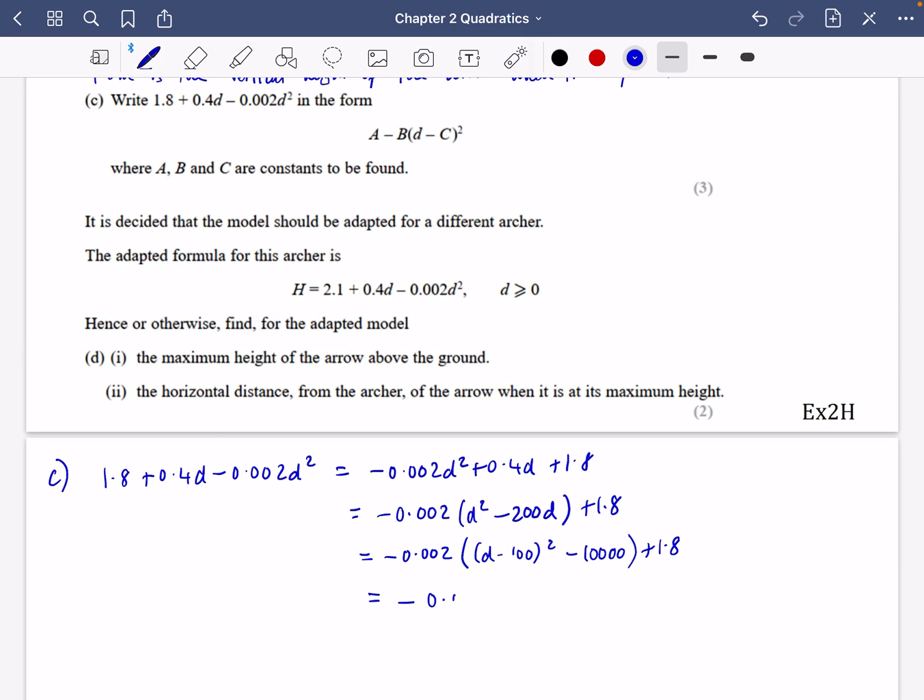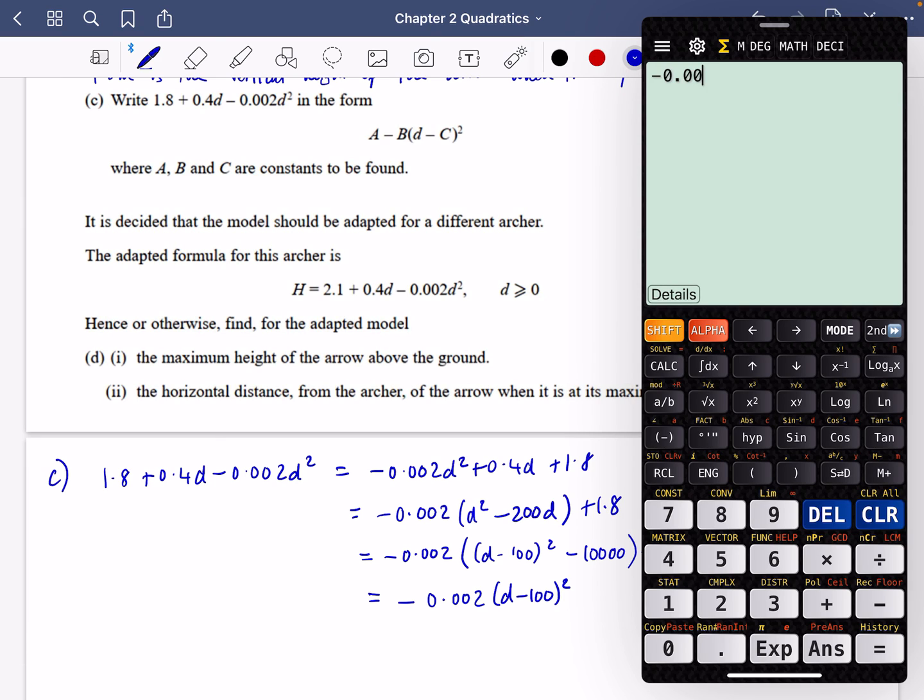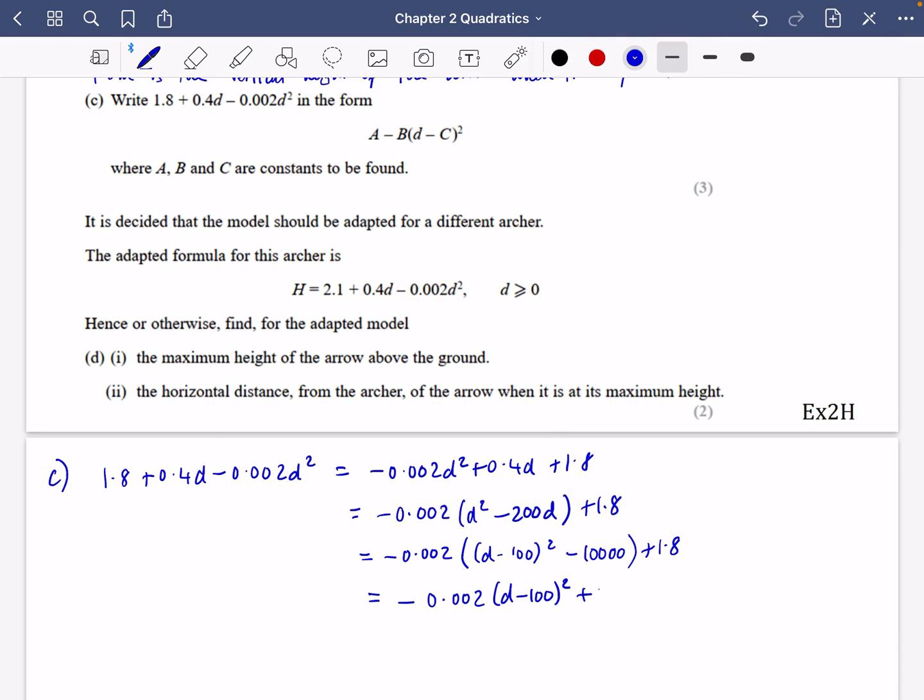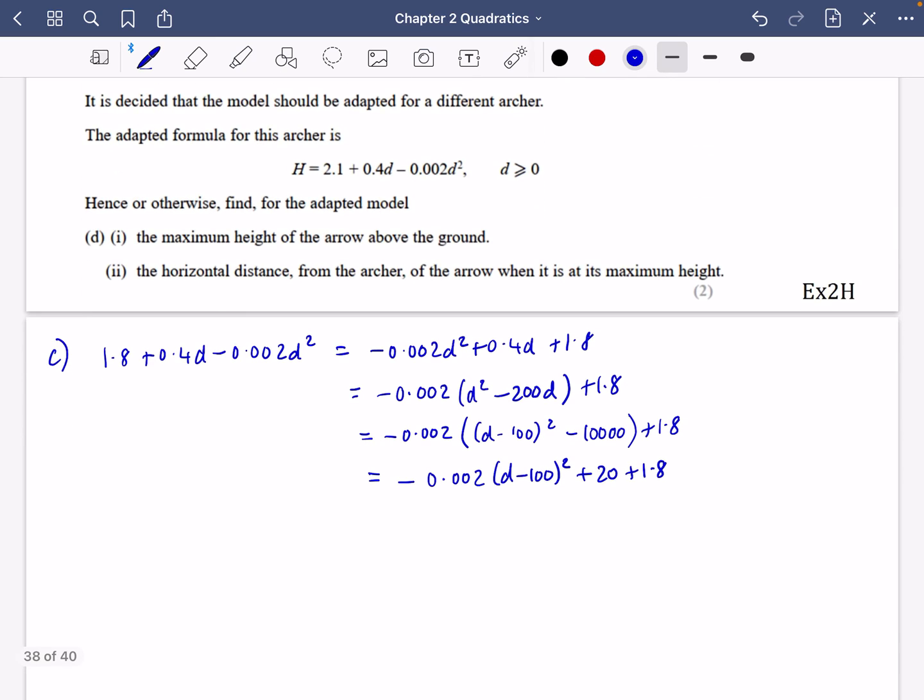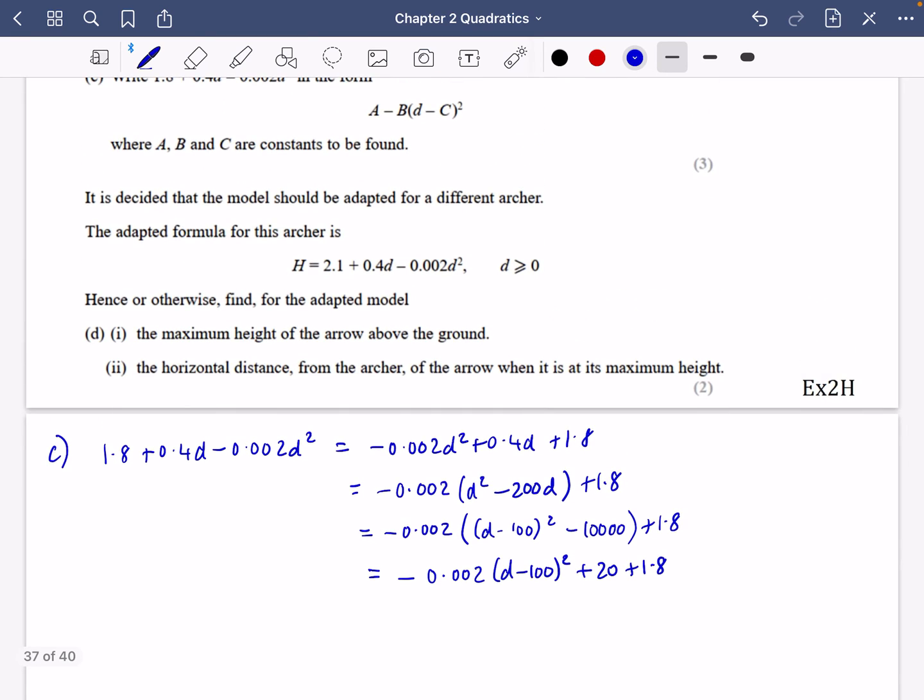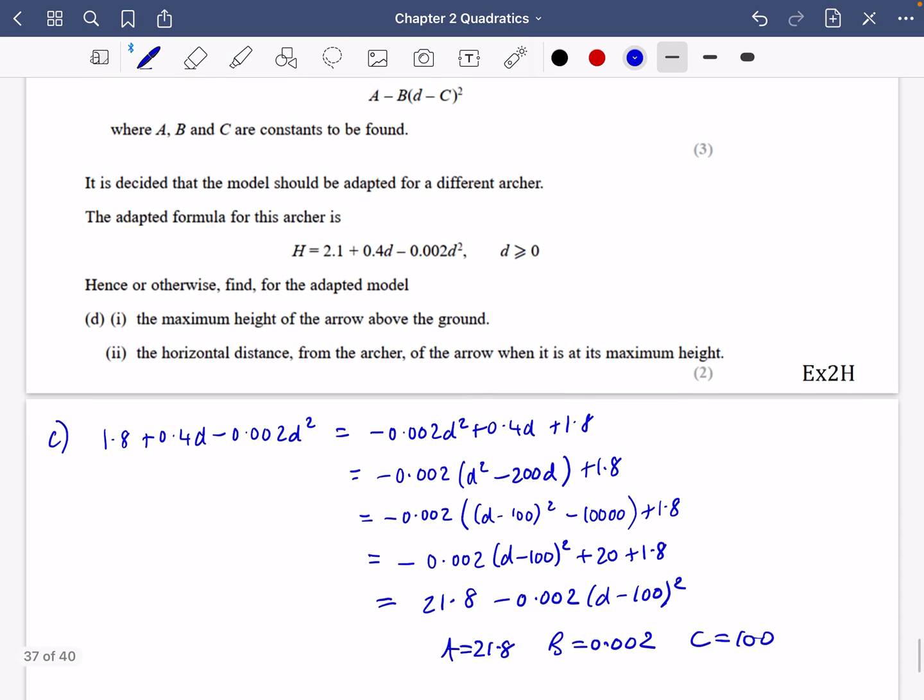So -0.002, that's going to be (d - 100)² minus 100² plus 1.8. So multiplying out, that's -0.002(d - 100)². And then I've got -0.002 multiplied by 10,000, that's -20. But it's actually a negative times a negative when I expand the brackets, so it is +20 and +1.8. So when I put it in the right way round here, I've got 21.8 - 0.002(d - 100)². So a is 21.8, b is 0.002, and c is 100.